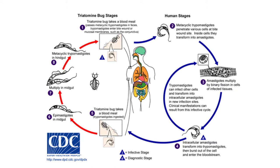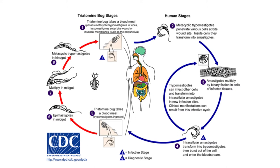During this time period, uninfected insect vectors may become infected by ingesting tripomastigotes during a blood meal. Once this occurs, the parasites migrate and multiply in the midgut of the vector before making their way to the hindgut in preparation for release.